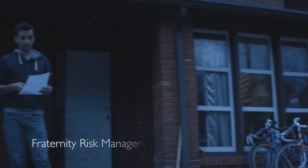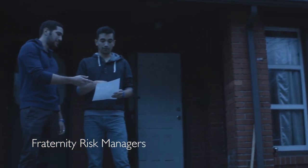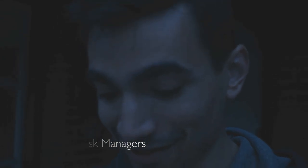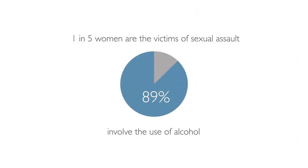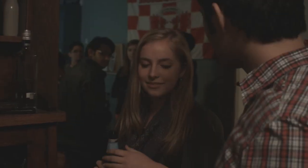These fraternities have their own risk management system in place, involving the use of risk managers — individuals assigned the role to keep fraternity events and parties safe. During college, one in five women are victims of sexual assault, and 89 percent of these incidents involve the use of alcohol.